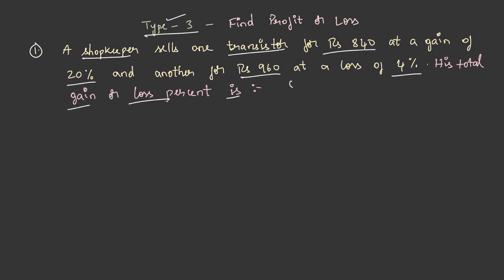We need to find out whether it is a gain or loss and then find out its percentage. Let us solve this. Here, the selling price of first transistor is given as rupees 840 and selling price of second transistor is given as rupees 960.